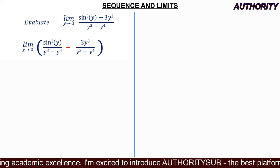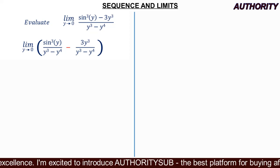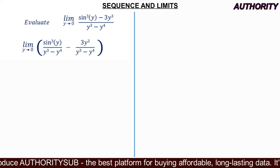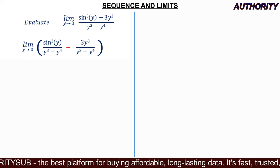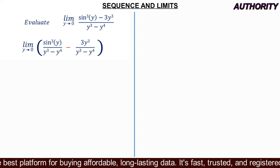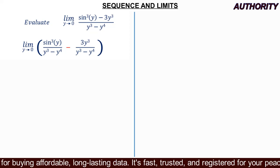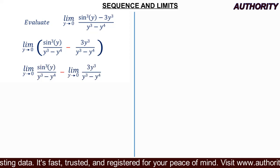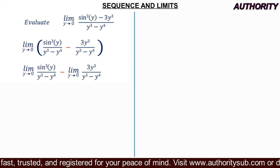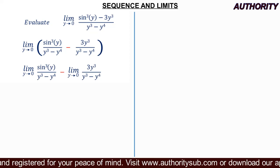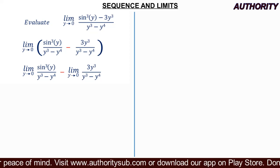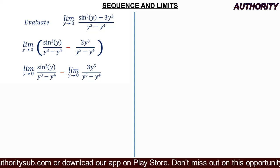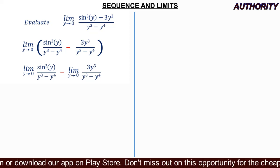By the definition of limits, taking the individual limit of each part is still the same. So we have: limit as y approaches zero of sine cubed y over y cubed minus y to the power of four, minus the limit as y approaches zero of three y cubed over y cubed minus y to the power of four.